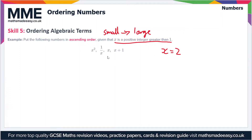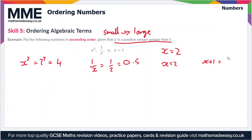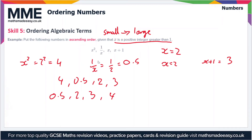Substituting x = 2: x² = 2² = 4, 1/x = 1/2 = 0.5, x = 2, and x+1 = 3. So the values are 4, 0.5, 2 and 3. Putting these in ascending order gives 0.5, 2, 3, 4. Converting back to the original algebraic forms, the final order from smallest to largest is: 1/x, x, x+1, x².